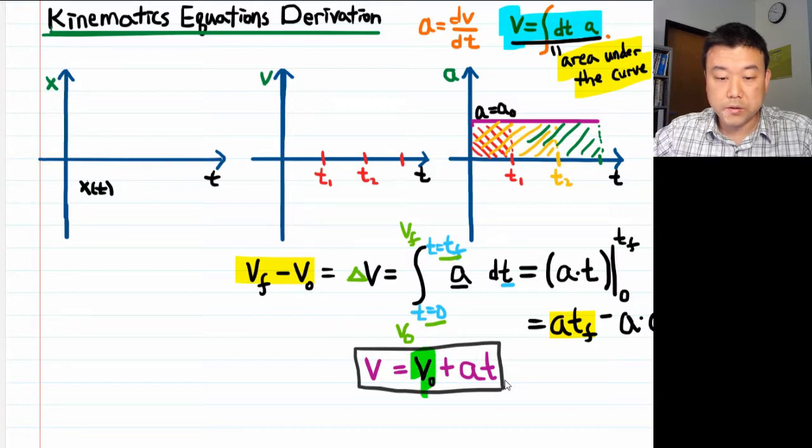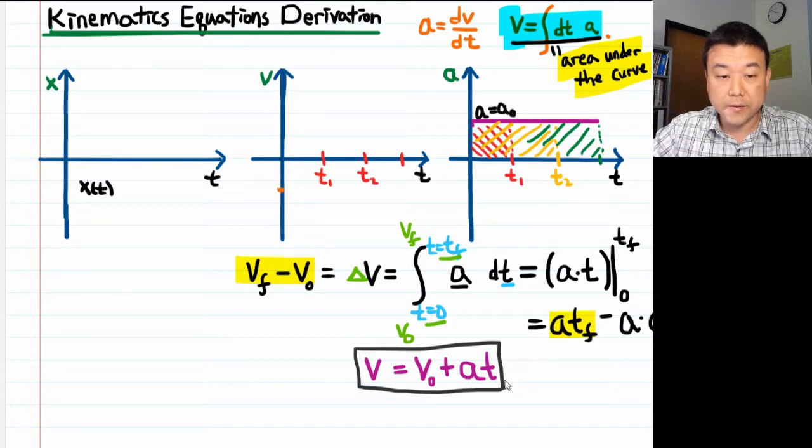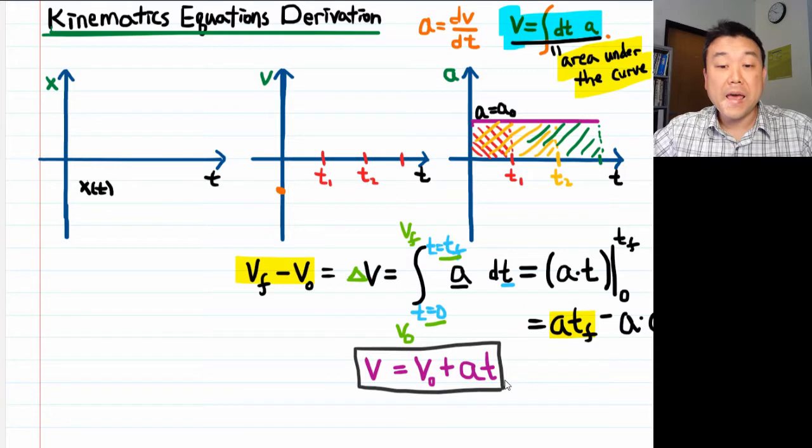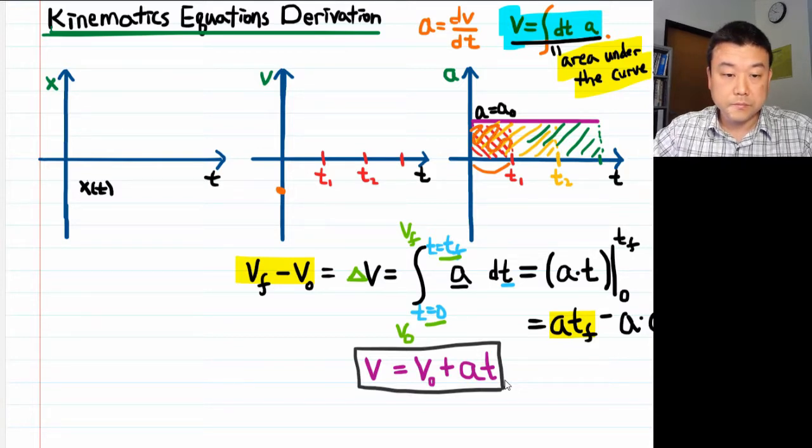You start out at some initial velocity, and the acceleration changes the velocity as a linear function of time. And this shows where the negative value of velocity came from. The initial velocity was simply negative. So what that means is, at time equals zero, we start out at some negative value of velocity. And what this area under the curve represents is the change in velocity. So from time equals zero to time equals t1, the velocity changes by the amount of area here.